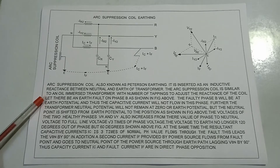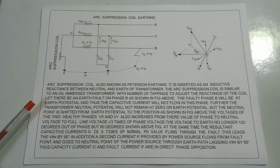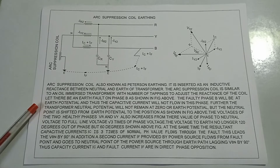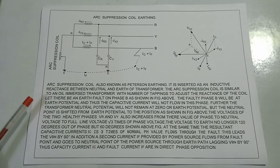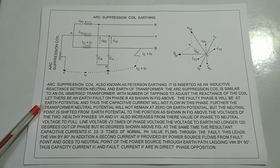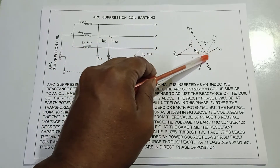Let there be an earth fault on phase B, as shown in the figure. The faulty phase B will be at earth potential and thus the capacitive current will not flow in this phase. Further, the transformer neutral potential will not remain at zero or earth potential — the neutral point is shifted from earth potential to the position shown in the figure above.